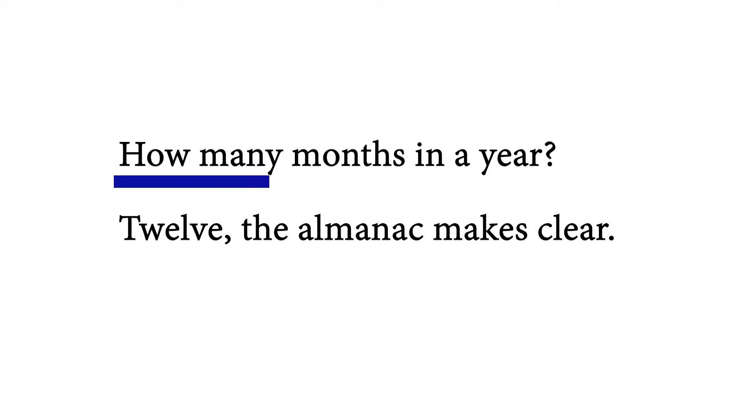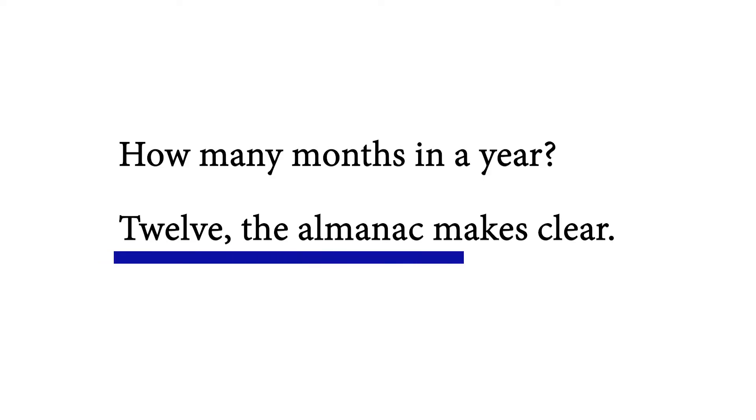How many months in a year? Twelve, the almanac makes clear. Now in this stanza, the poet is asking us another question. She asks us as to how many months are there in one year. Do you all know? Yes, we have twelve months in one year. Do you know the names of all the months? And how do we come to know that there are twelve months in one year? We come to know about this through the almanac.